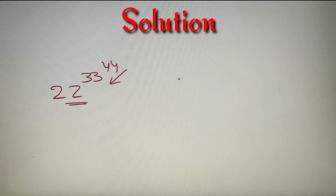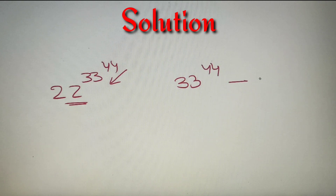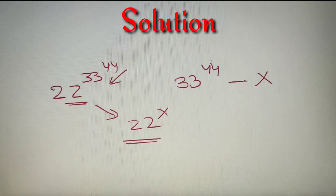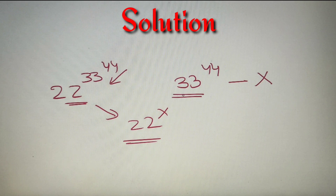First, we have to find the last two digits of 33 raised to the power 44 — let us assume it to be x. Then we'll find the unit digit of 22 raised to the power x, and that will give us the same result as the unit digit of the original number.